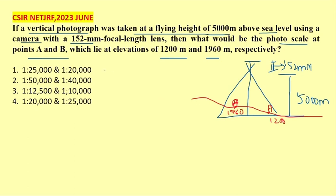So we have to calculate the scale. Scale is equal to focal length, that is given - 152 - divided by flying height. For B, the flying height is 5000, but if we calculate from this point to point A, it is different now, and to this point B also it is different now.